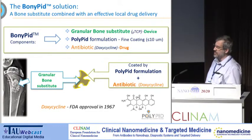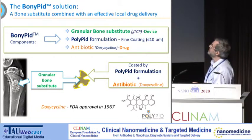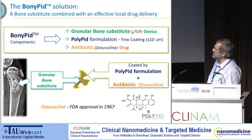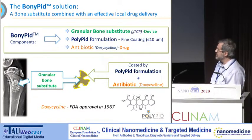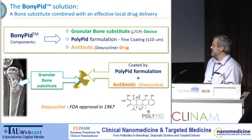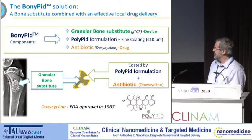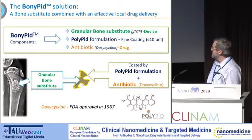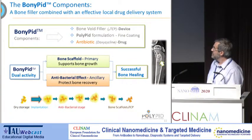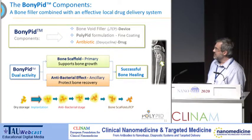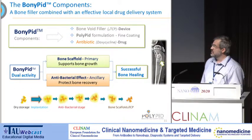This is the concept of Bonipid — based on Polipid technology. Bonipid is bone granules that use standard art to fill bone gaps, but we coat them with a Polipid formulation that includes an antibiotic. The antibiotic is doxycycline — a very old drug approved 50 years ago, very safe, very effective, selected for its wide antibacterial activity. So we have two activities: bone scaffolding by the device, and the antibacterial effect — both together should lead to successful bone healing.